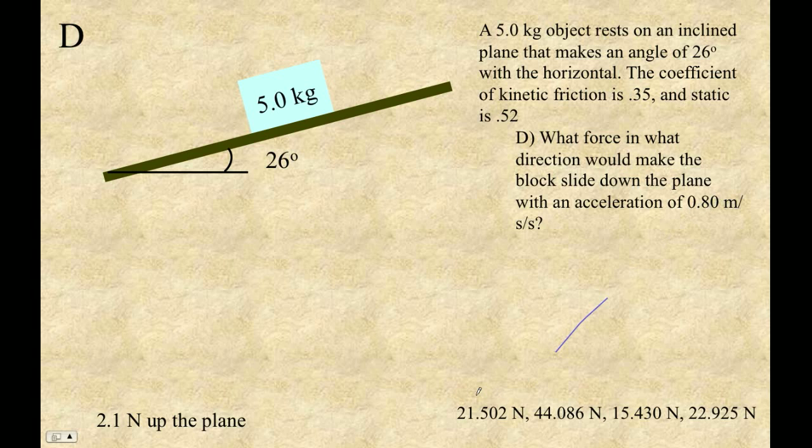Now, this is down here, this is our force parallel. That's mg sine theta. This is our force perpendicular, the thing we use to calculate the friction forces, and it is mg cos theta. And then this is our 0.35 times the force perpendicular. This is 0.52 times the force perpendicular, because there are no other forces acting perpendicular to the plane.